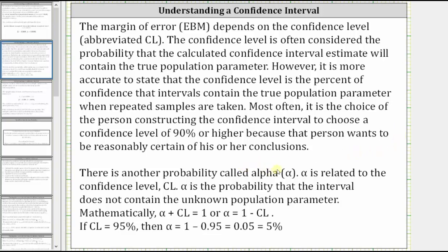There is another probability called alpha (α). Alpha is related to the confidence level; α is the probability that the interval does not contain the unknown population parameter. Mathematically, α + CL = 1, or α = 1 - CL.